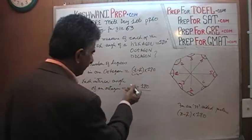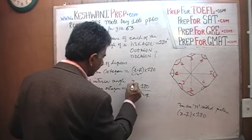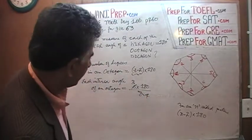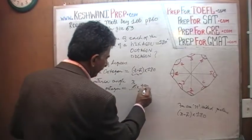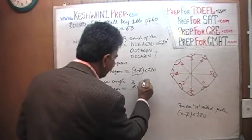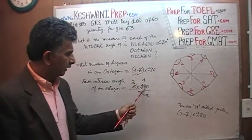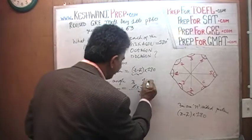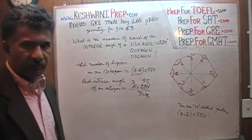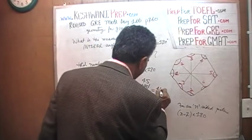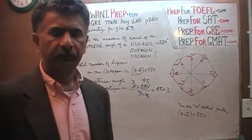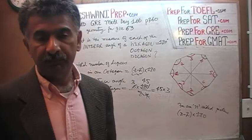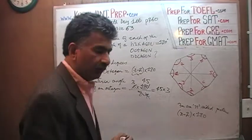Each interior angle of an octagon equals 6 times 180 over 8. Divide the top and bottom by 2: eight becomes four and six becomes three. Now divide 180 by 4. How many fours in 18? Four fours are 16, remainder 2, which joins the zero to make 20. How many fours in 20? Five fours. So we have 45 times 3. 40 times 3 is 120, plus 15 more gives us 135.